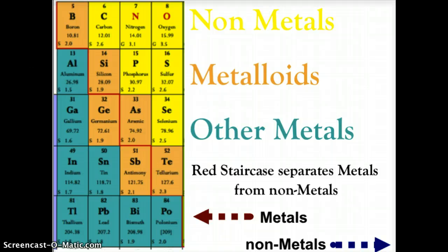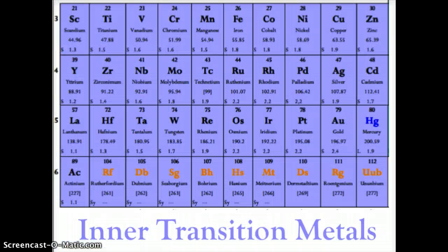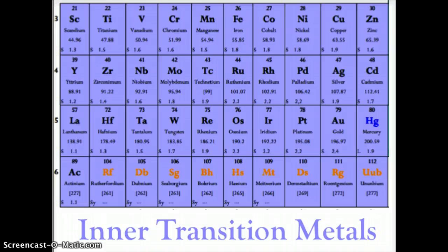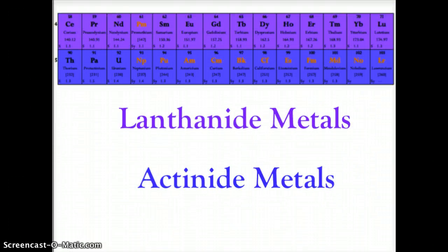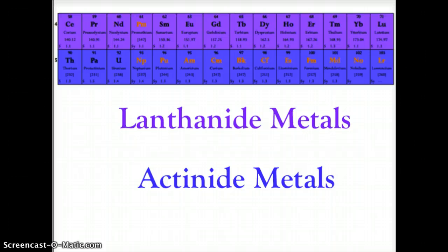The blue region contains the other metals, and in the middle you have the large purple block — the inner transition metals, which are the elements we most commonly think of as metals, like nickel, zinc, copper, iron, and tungsten. At the very bottom of the periodic table we have the F block, which contains two rows: the lanthanide metals and the actinide metals. We will discuss their placement when we cover the history of the periodic table. Many of these elements are synthetics — elements made by man.